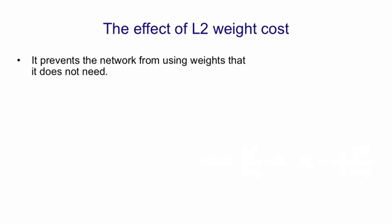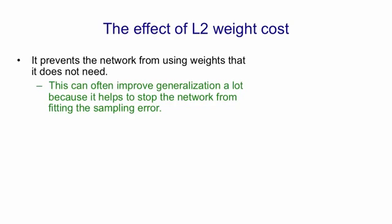The effect of an L2 penalty on the weights is to prevent the network from using weights that it doesn't need. This often improves generalization a lot because it can use those weights that it doesn't really need to fit the sampling error.